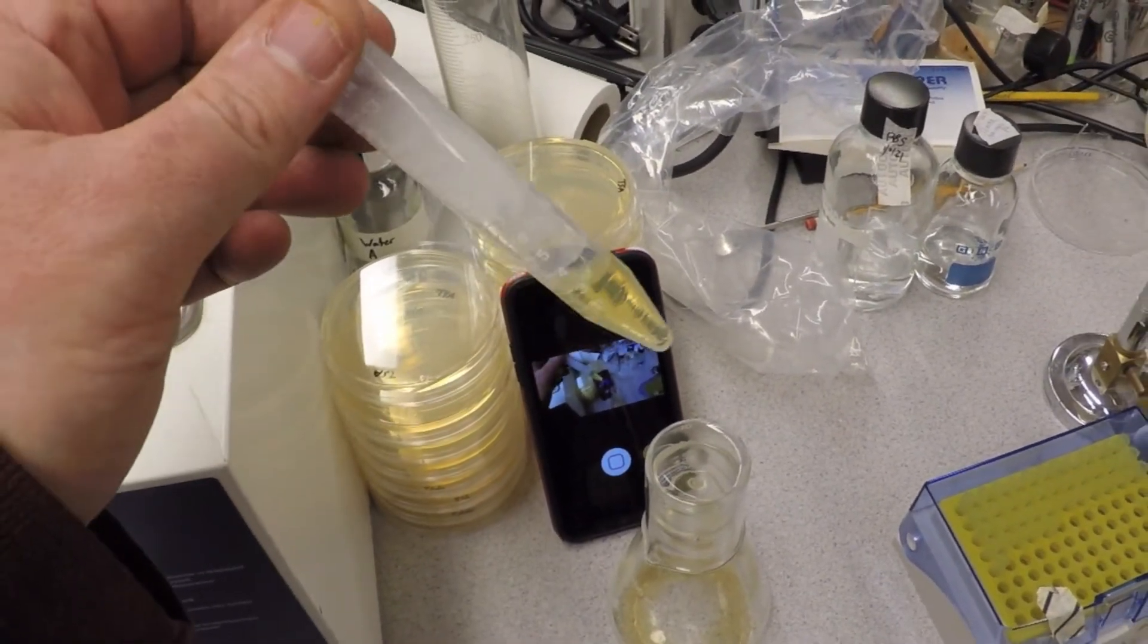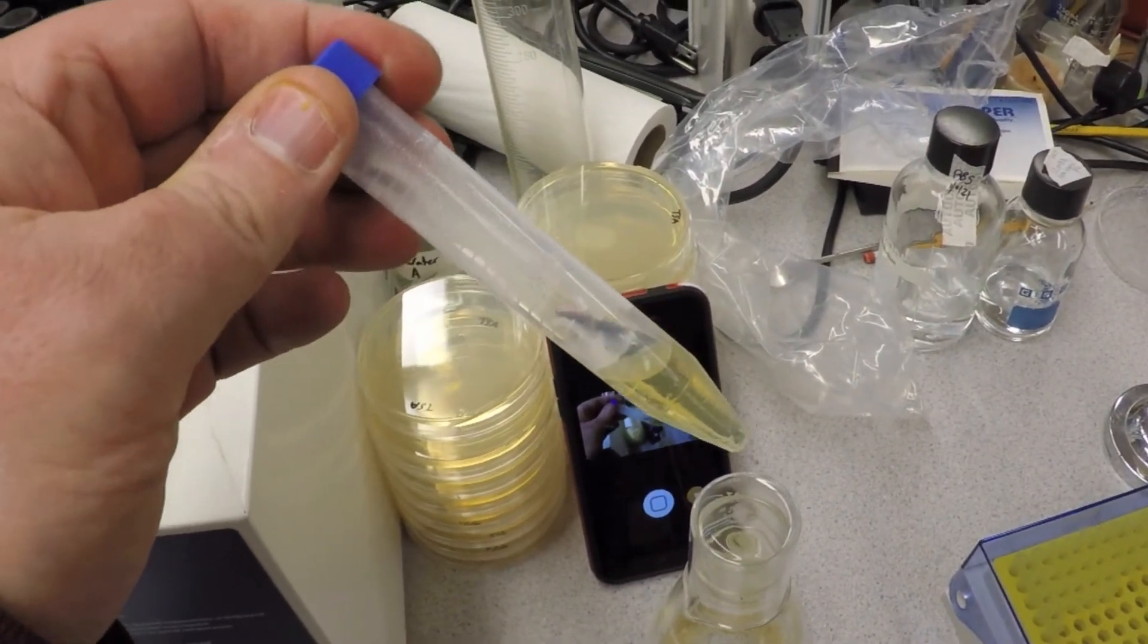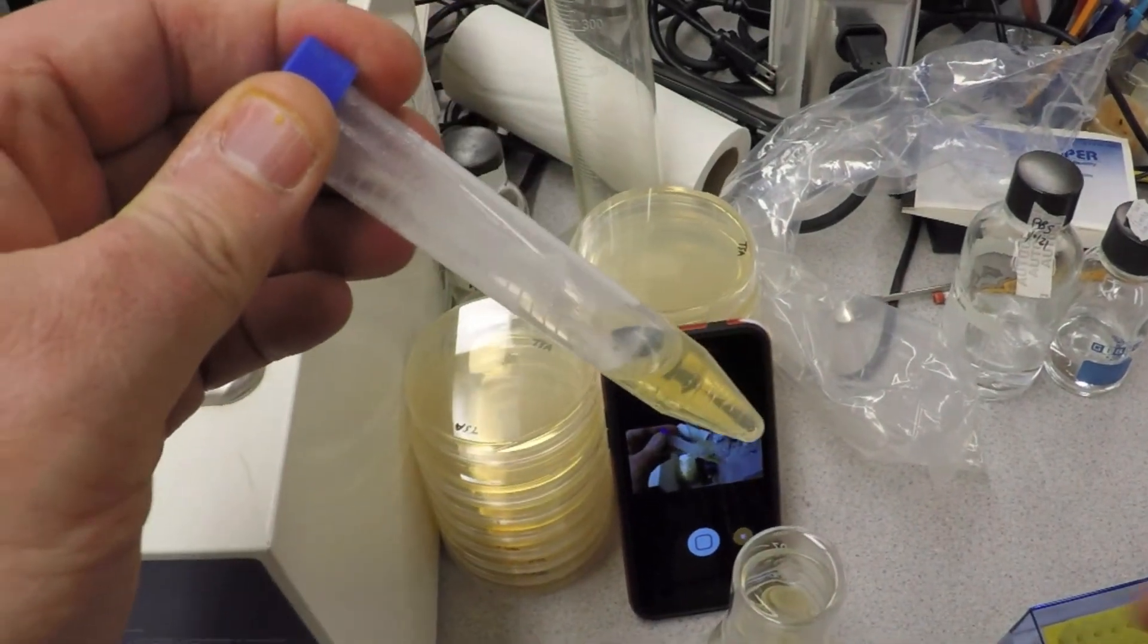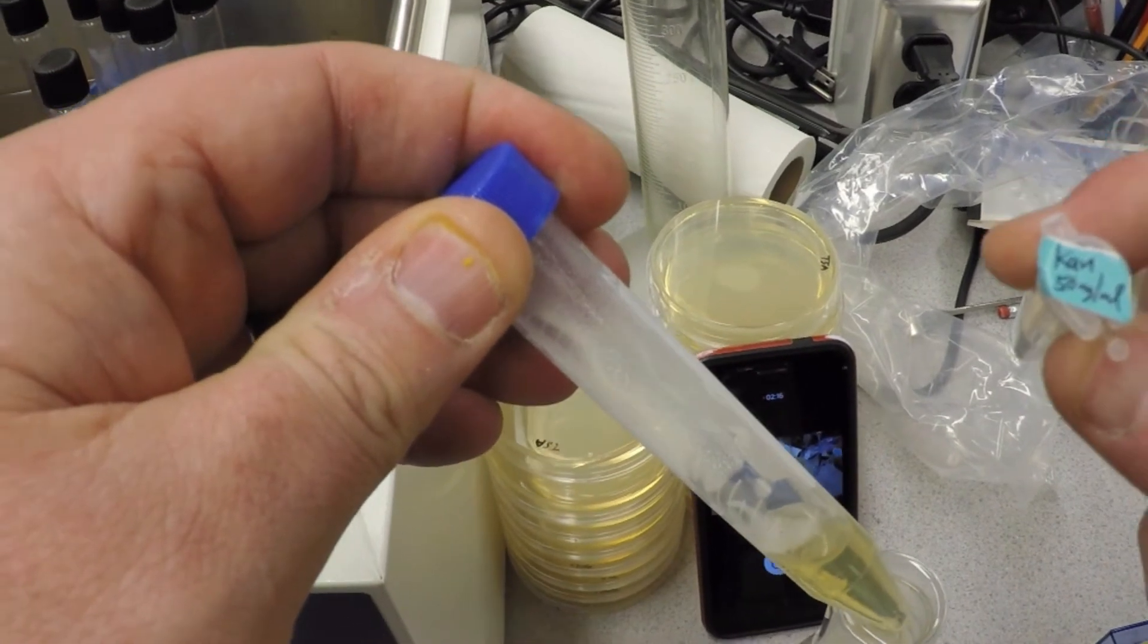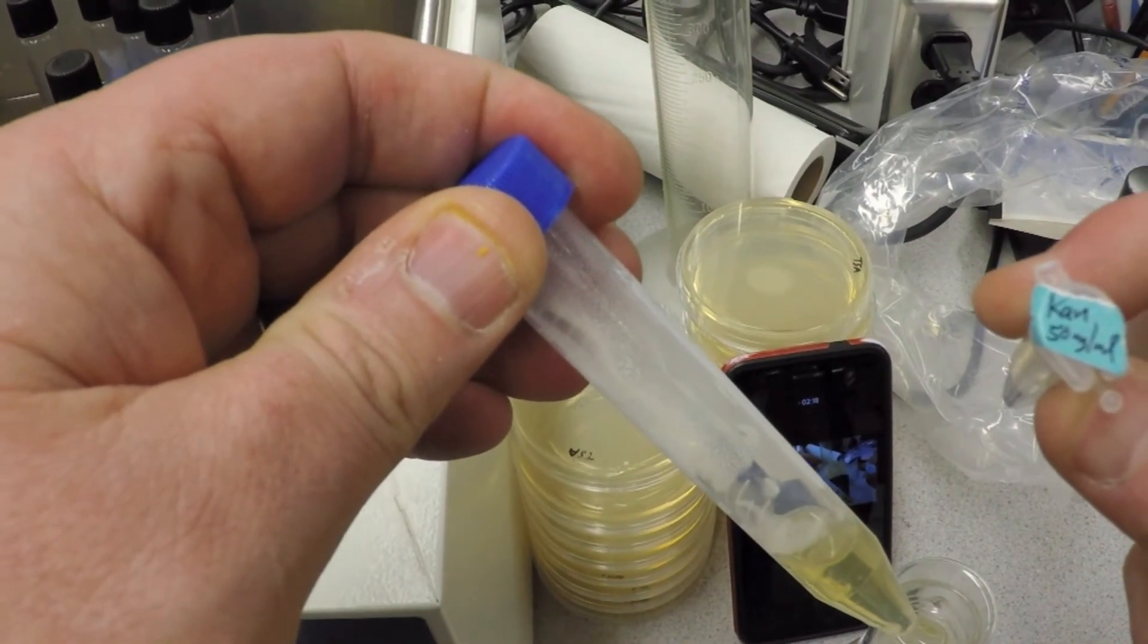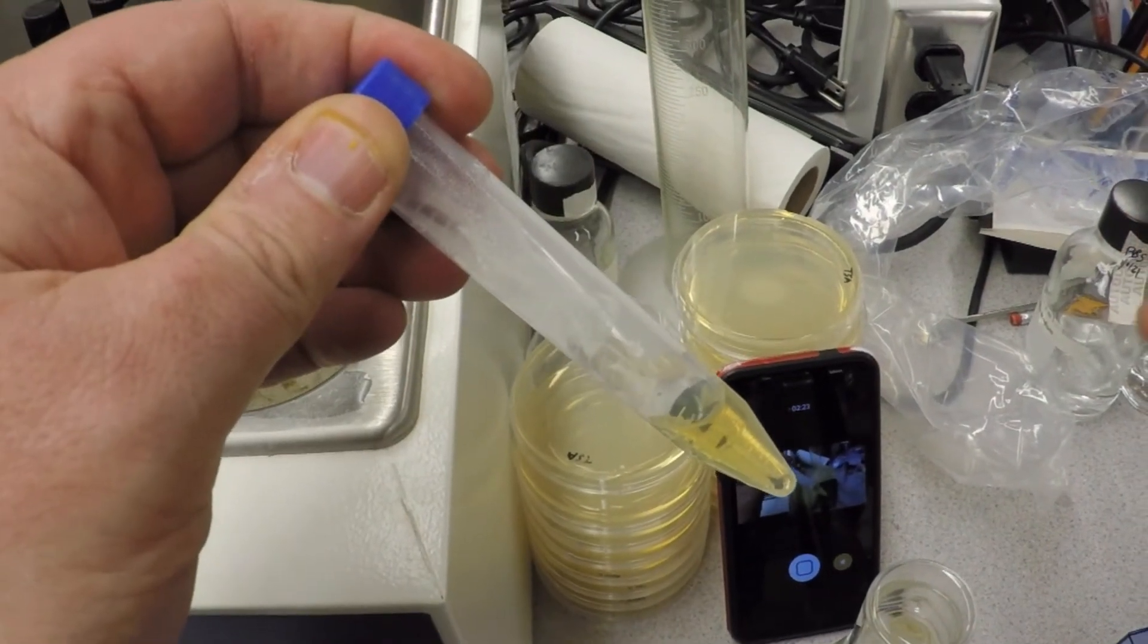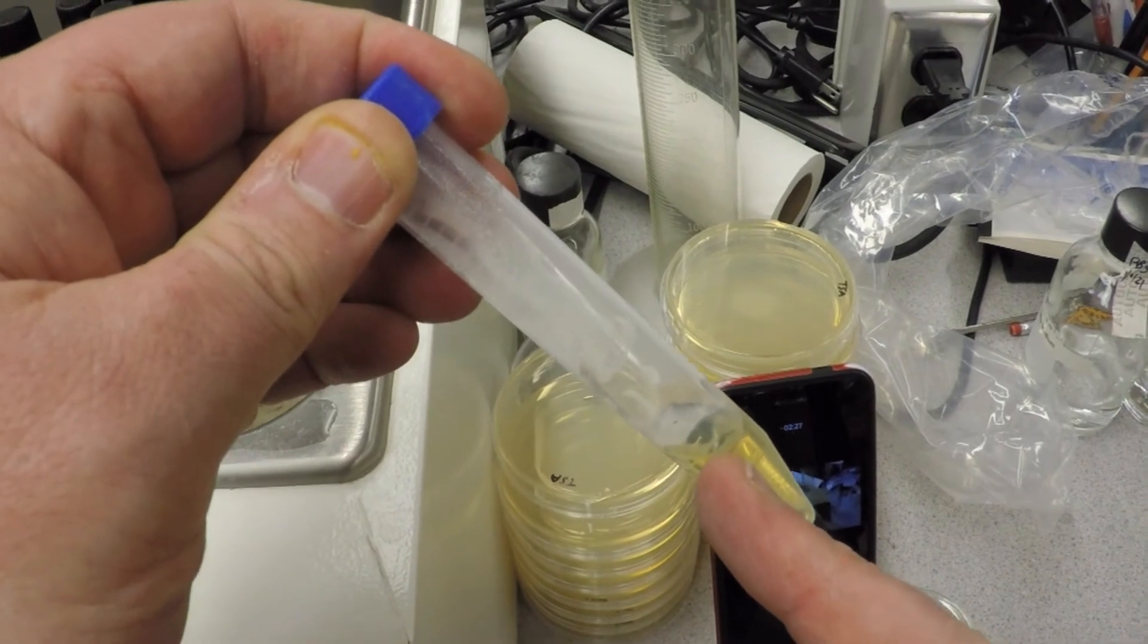So the problem is you've got to make this stuff have kanamycin in it. So I want you to figure out if there's three mils here, how much of this stock kanamycin you're going to put in. You're going to get a stock that's 50 milligrams per mil, and you want three mils with a final concentration of 50 micrograms per mil.